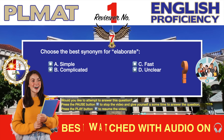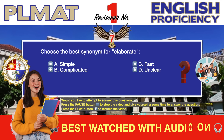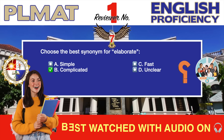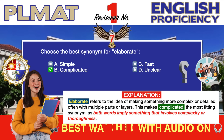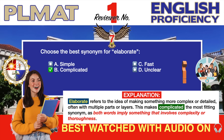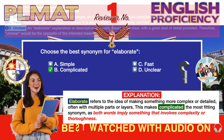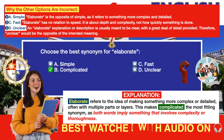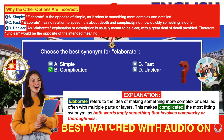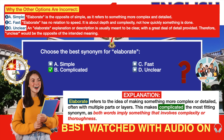Question number seven. Choose the best synonym for 'elaborate.' A. Simple. B. Complicated. C. Fast. D. Unclear. The correct answer is B, Complicated. 'Elaborate' refers to the idea of making something more complex or detailed, often with multiple parts or layers. This makes 'complicated' the most fitting synonym, as both words imply something that involves complexity or thoroughness. 'Simple' is incorrect because 'elaborate' is its opposite. 'Fast' has no relation to 'elaborate.' 'Unclear' is also incorrect because an elaborate explanation is usually meant to be clear and detailed.